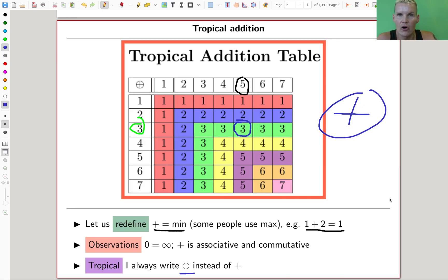That's why I usually write the circle plus for tropical addition to distinguish it from the usual plus. And the zero element - I always like to write this equation, my favorite equation of all time: zero equals infinity. So now you get the idea. It gets everyone scared, even mathematicians. Zero equals infinity.